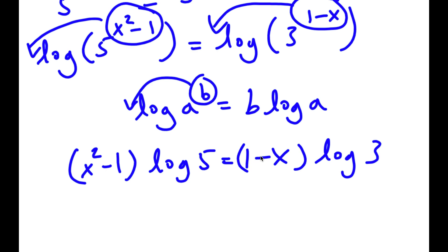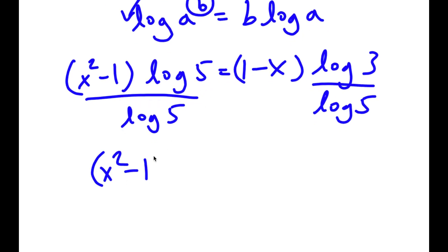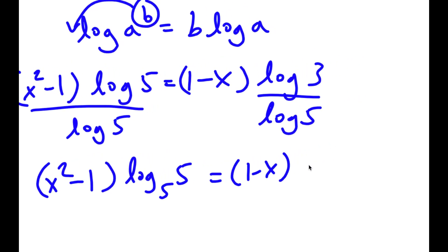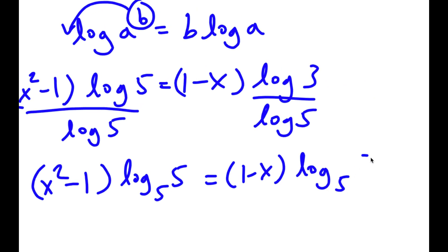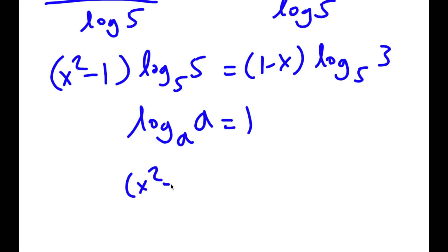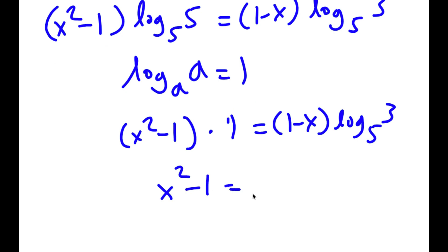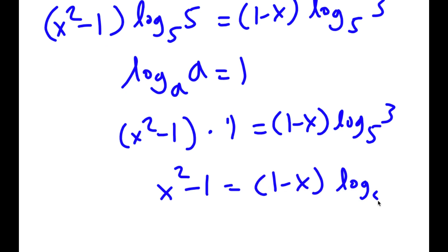Now I'm going to divide both sides by log 5. Log 5 over log 5 is the same thing as log base 5 of 5, and log 3 over log 5 is the same thing as log base 5 of 3. Since log base a of a equals 1, log base 5 of 5 equals 1. So I have x squared minus 1 is equal to 1 minus x times log base 5 of 3.